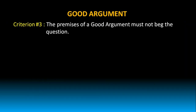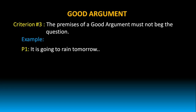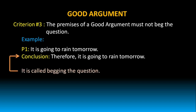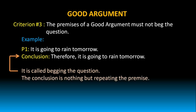Let's look at criterion 3. The premises of a good argument must not beg the question. Let's understand this with the help of an example. It is going to rain tomorrow. Therefore, it is going to rain tomorrow. This is called begging the question — the conclusion is nothing but repeating the premise. Hence, this is not a good argument. Good arguments should not beg the question.